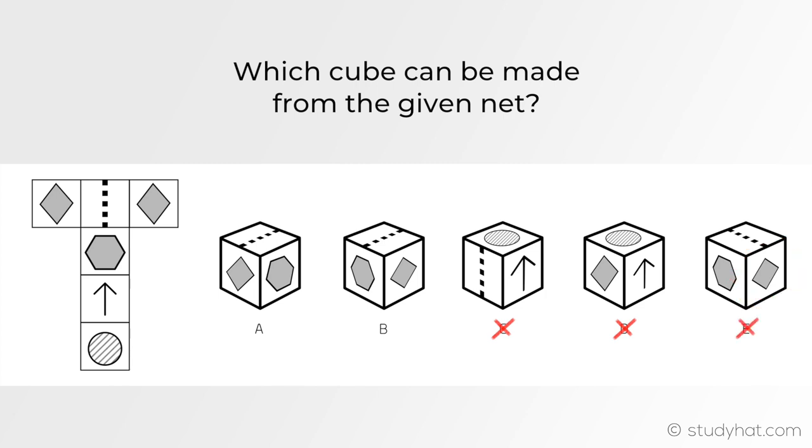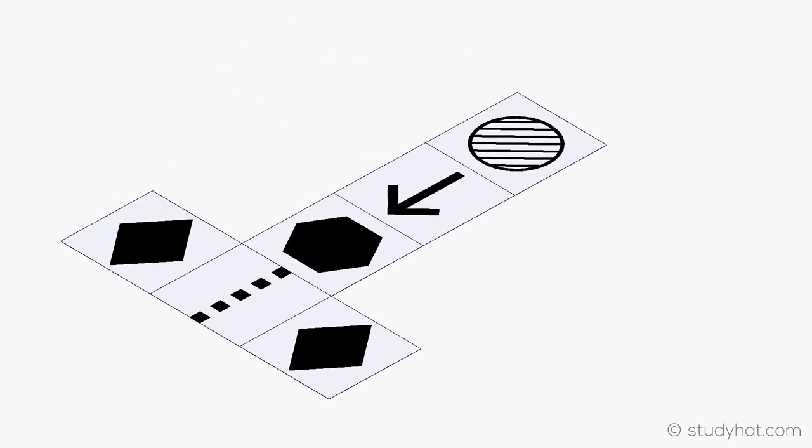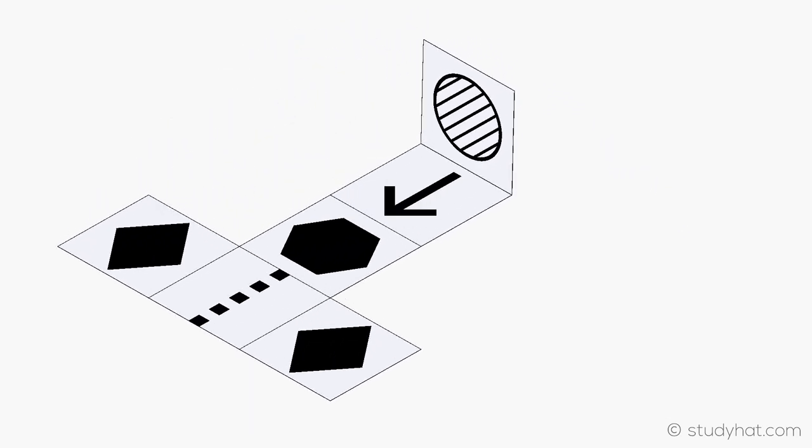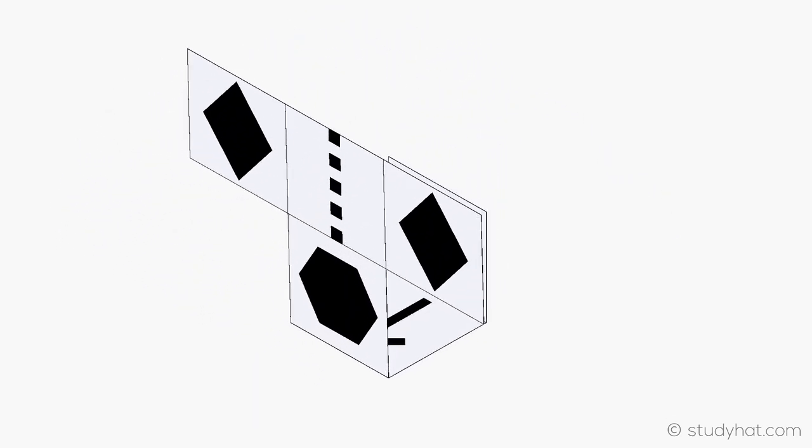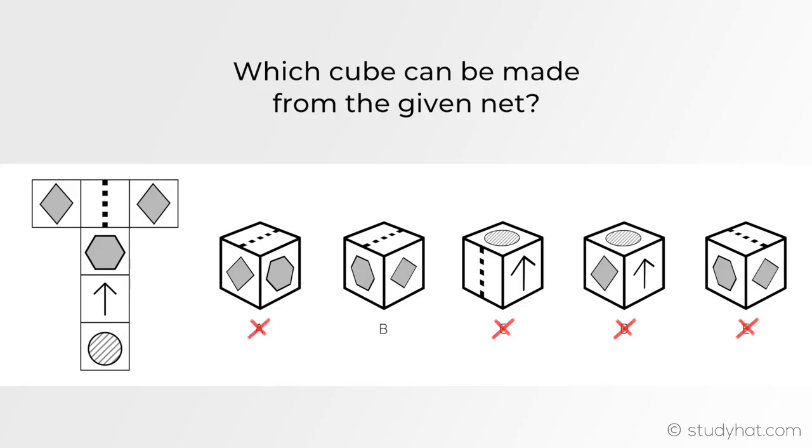That leaves us with A and B to choose from. Looking at A, we have this line here, and then the kite shape below it. But if the net was folded from this line, what you'd expect to see is the dotted line to be facing in a sort of horizontal direction, which it isn't. Therefore A is incorrect, leaving us with the answer of B.